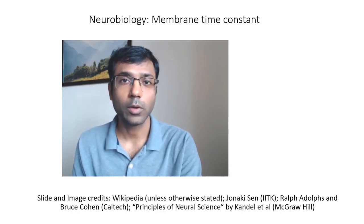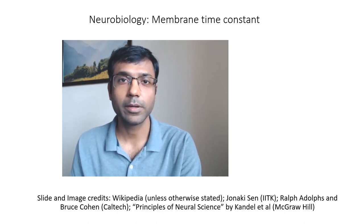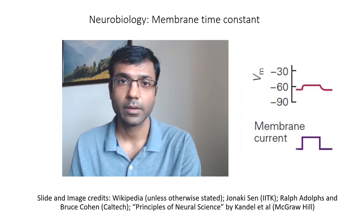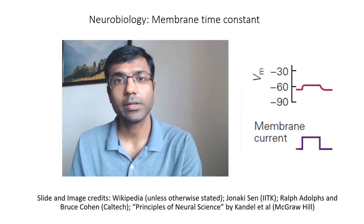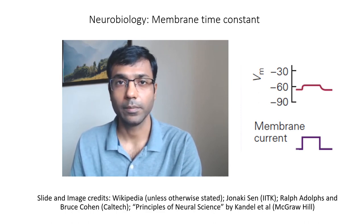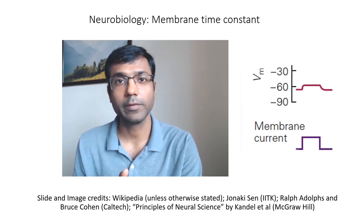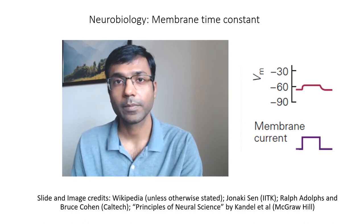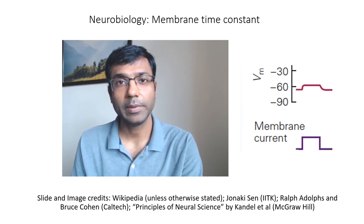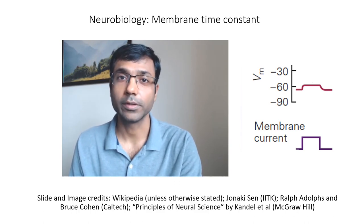One very interesting thing we observed is that even if you give a very sharp current pulse, the change in membrane potential is not as sharp as shown in this picture. So even if you have a square current pulse, the membrane potential changes slowly. So if you give a positive current it will rise slowly, or if you give negative current then it will become more negative slowly. So what determines the speed of this change in membrane potential? That is what we will try to understand in this video.